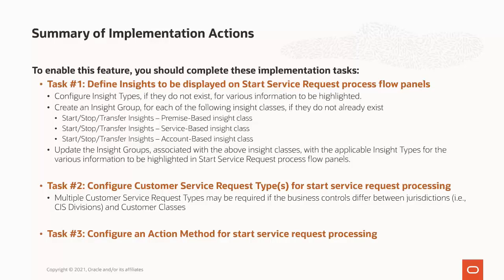The applicable process flow panels use these insight groups to determine which insights to highlight. Next, you must configure one or more customer service request types for start service request processing. These contain the business controls, configuration options, and extension points to support various business requirements. Start service request process flows and back-end customer service requests use these for processing start service requests.